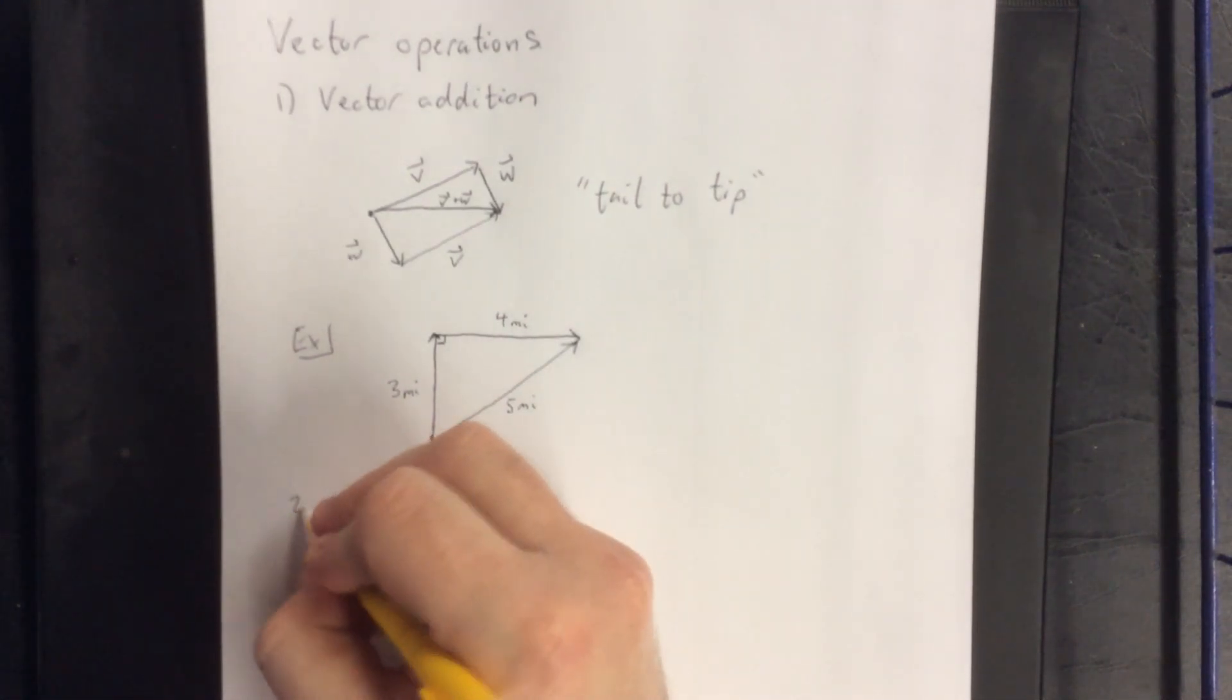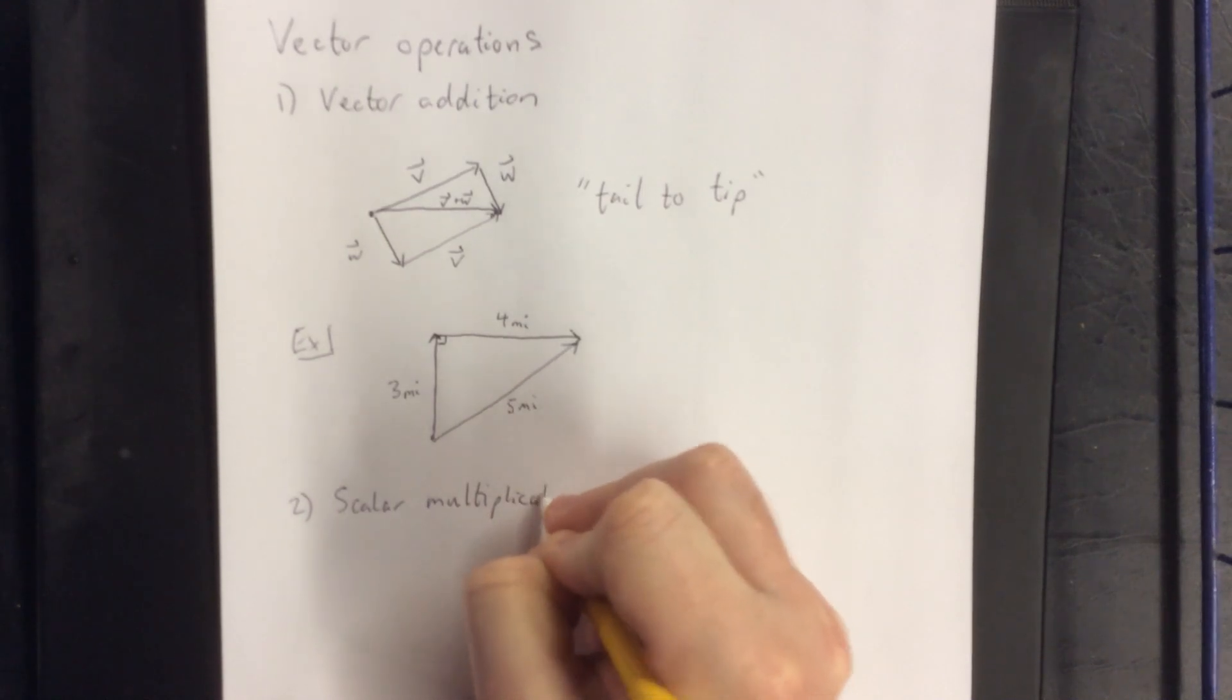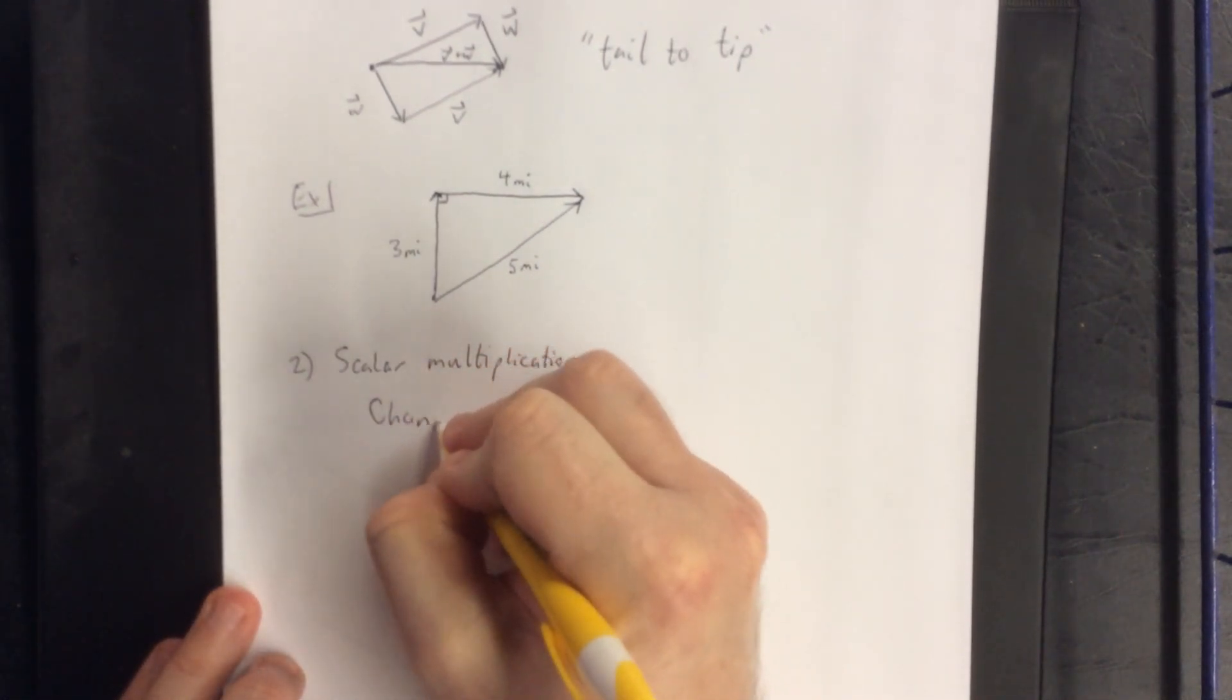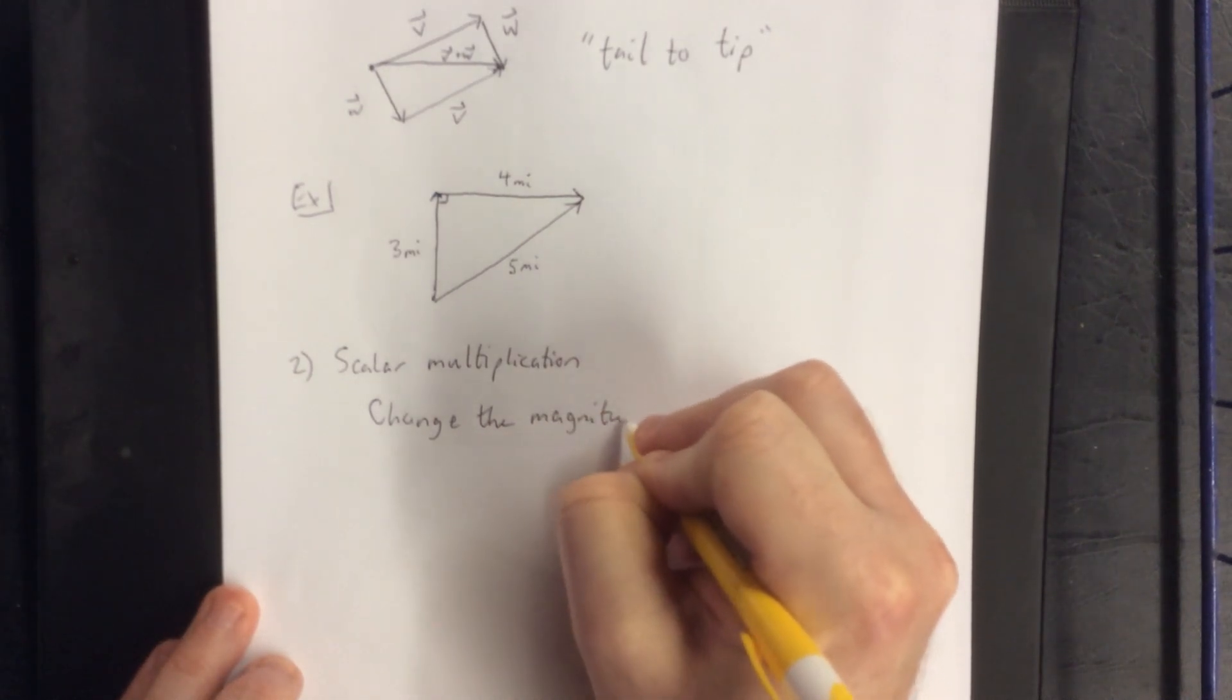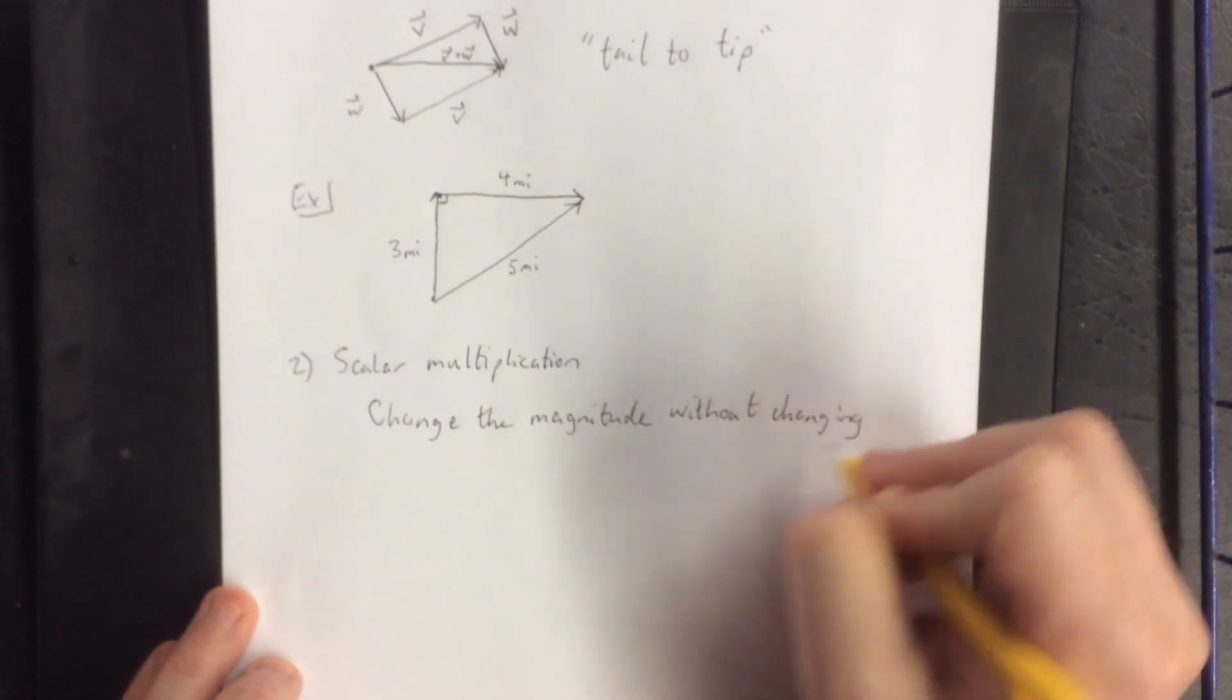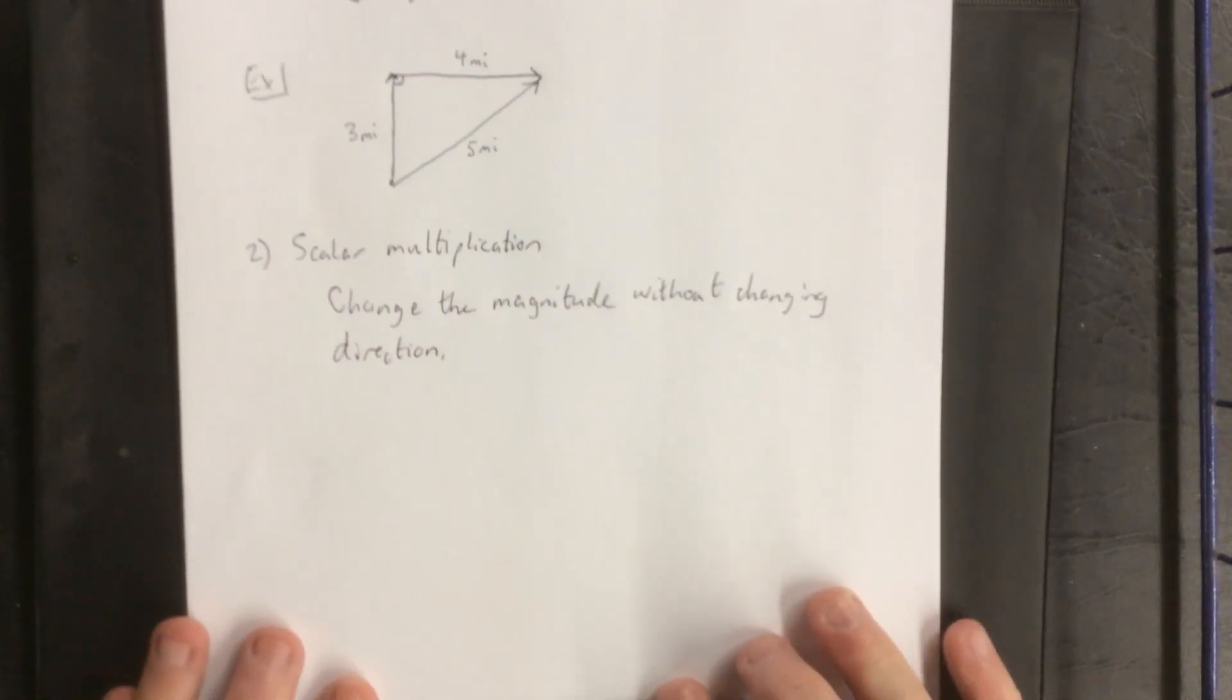Now another one would be scalar multiplication. Scalar multiplication is how you change the magnitude of a vector without changing the direction.